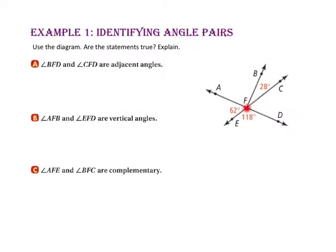Let's look at part B: angle AFB and angle EFD — are they vertical angles? Even though ray FA and ray FD are opposite rays, ray FB and ray FE are not. Therefore, the two angles are not vertical angles.